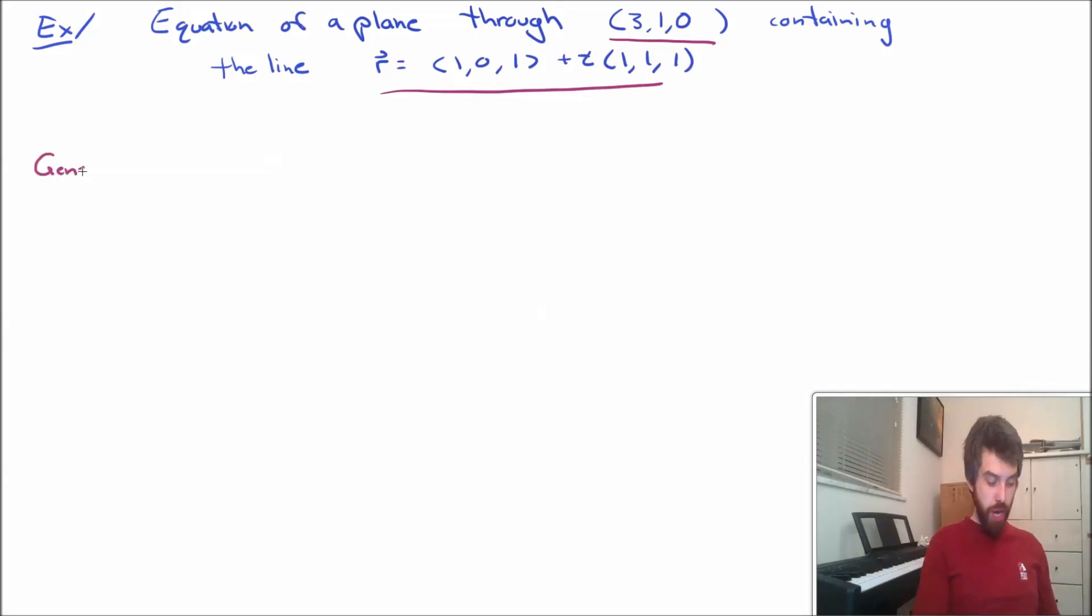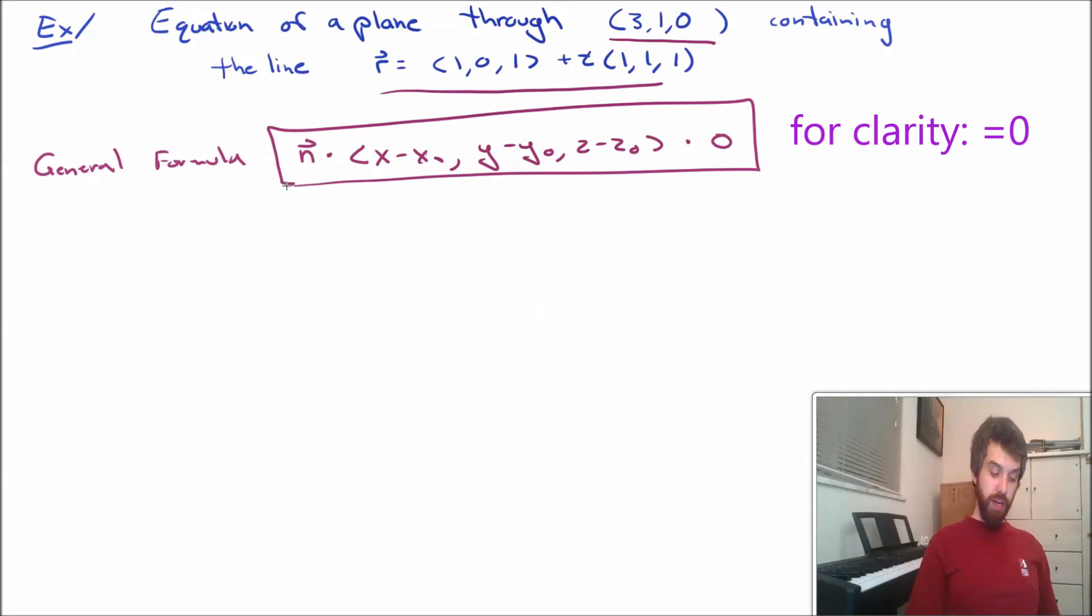Let's remember that the general formula was that you wanted to find some normal vector and that you took the dot product of the normal vector with the vector x minus x0, y minus y0, and z minus z0. And that dot product was going to be zero. This was the formula that we wanted.